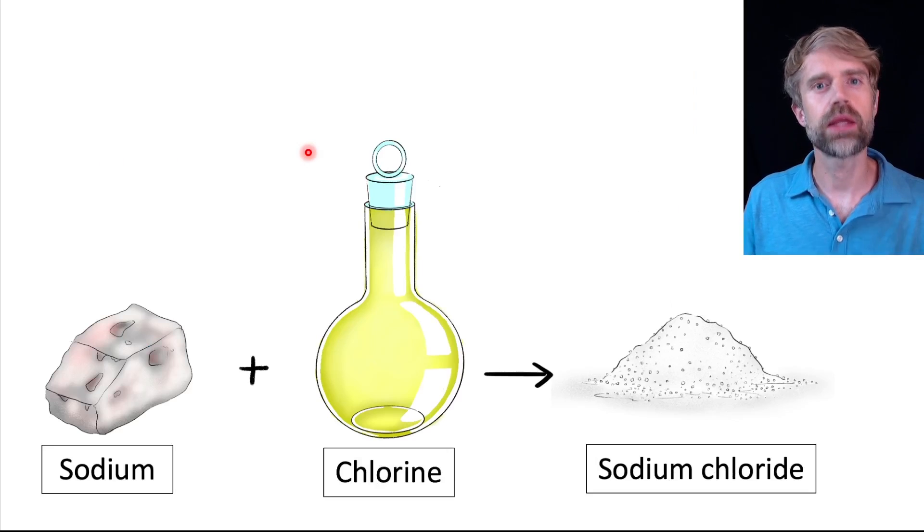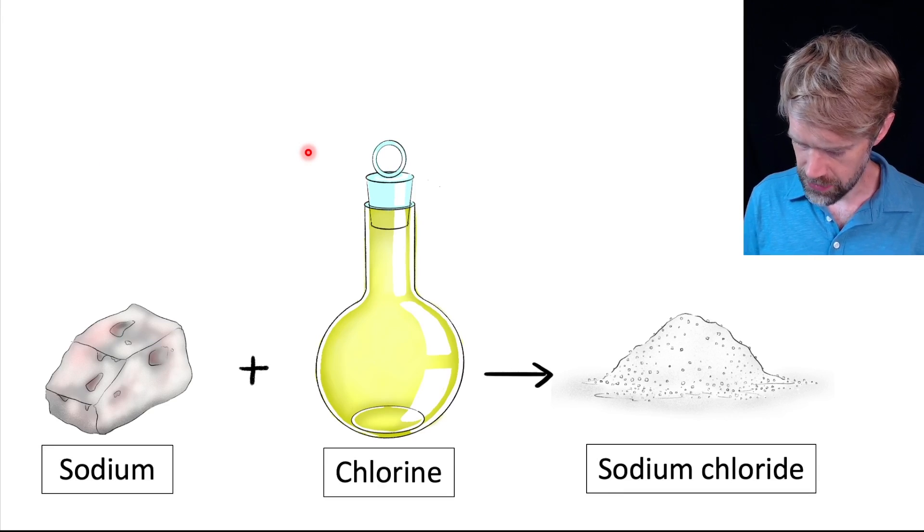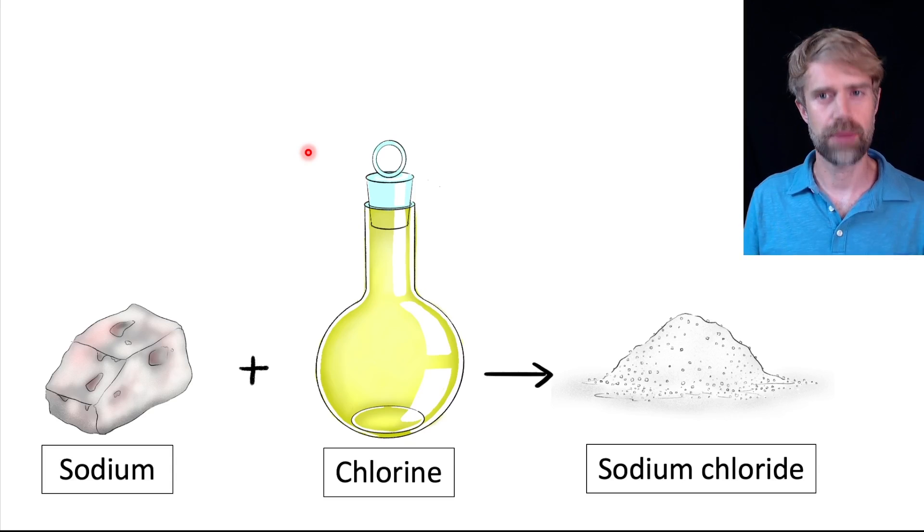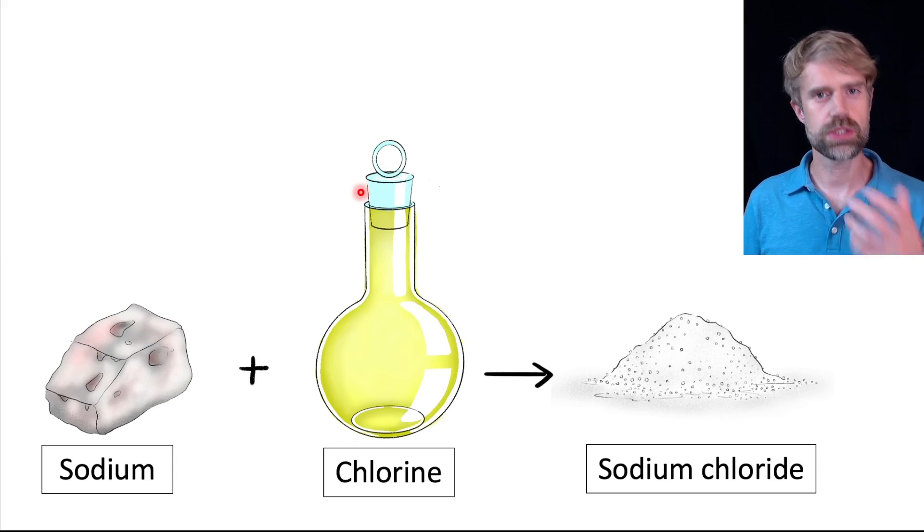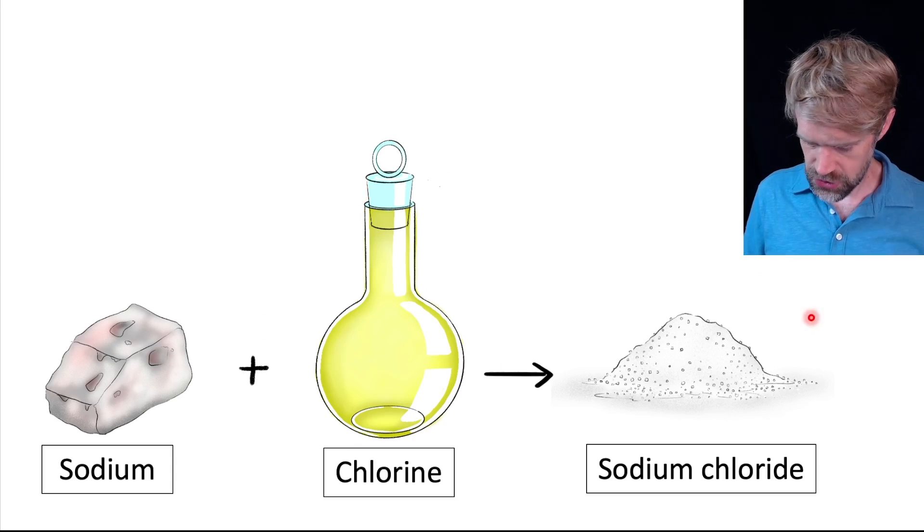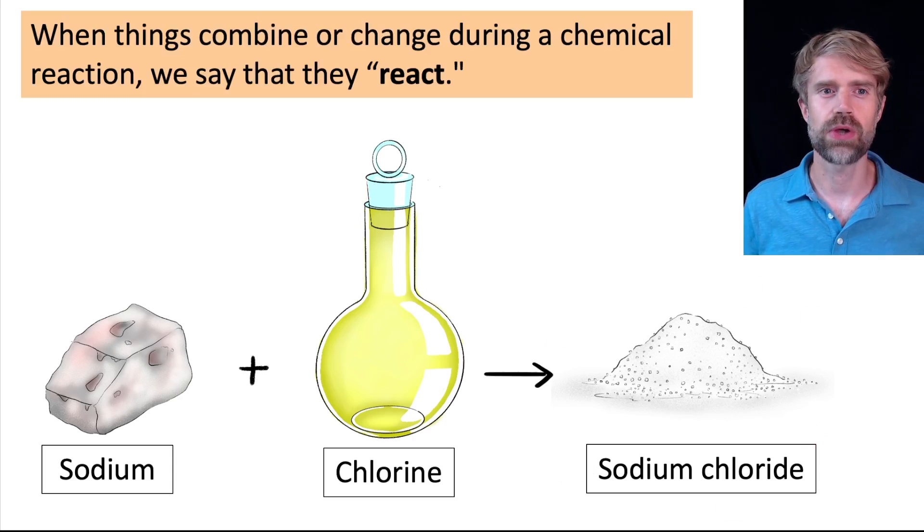One thing that we see a lot in chemical reactions is elements coming together to form compounds. For instance, here's the element sodium, and here's the element chlorine. Now, if you bring sodium and chlorine together in a chemical reaction, they react to form something called sodium chloride, which is another name for table salt.